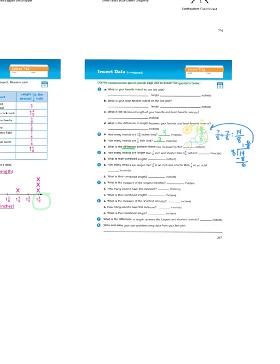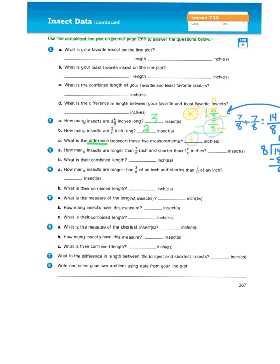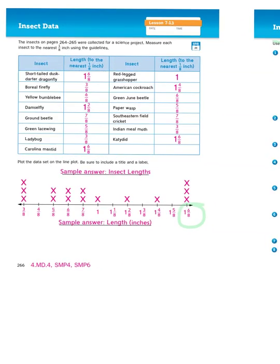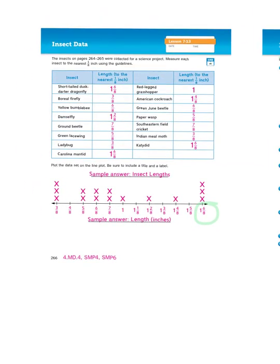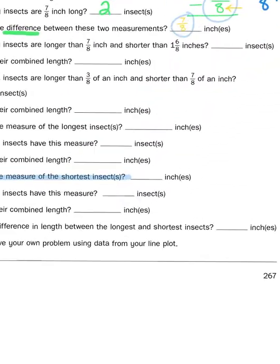Let's take a look at one more problem. I'm going to jump to number six. What is the measure of the shortest insects? So again, I've got to look at my table and my line plot graph. Well, the shortest insects are three eighths: the boreal firefly, the ladybug, and the Indian meal moth. So I'm going to put that measurement, three eighths, over here.